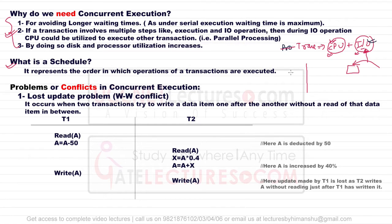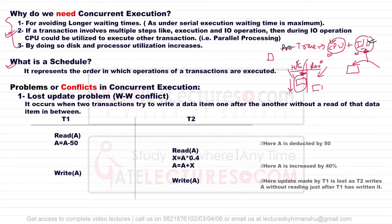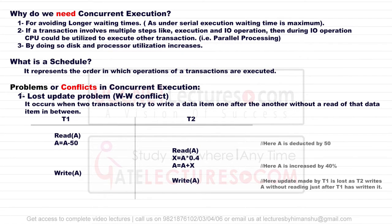Next, what is a schedule? For example, if two transactions are working in parallel — say this is a bank account, one person is Himanshu and another is Ravi, and both are trying to deposit funds into the same account number — for every deposit operation we have three types of statements. How they are going to perform these operations, and the sequence of those operations, defines a schedule. A schedule represents the order in which the operations of transactions are executed.